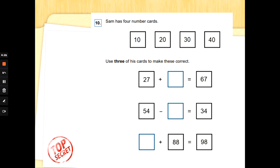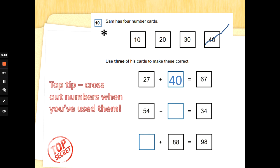Remember we're going to read everything before we think this through. Question ten. Sam has four number cards: ten, twenty, thirty, and forty. Use three of his cards to make these correct, so you will have one left over. You've got those four numbers, you're not allowed to make any other number up. So, twenty-seven add one of those numbers is sixty-seven. I'm going to count on in tens from twenty-seven to see if I can get to sixty-seven. Twenty-seven, thirty-seven, forty-seven, fifty-seven, sixty-seven. I've got four fingers up, or four tens. Forty. Is forty a choice for me? Yes, it is. So I'm going to write forty in the box, and then so I don't get mixed up, I'm going to cross the number forty out because I've already used it. Here comes a top tip. Cross out anything you've used when you've put it in a box, so you don't reuse it.